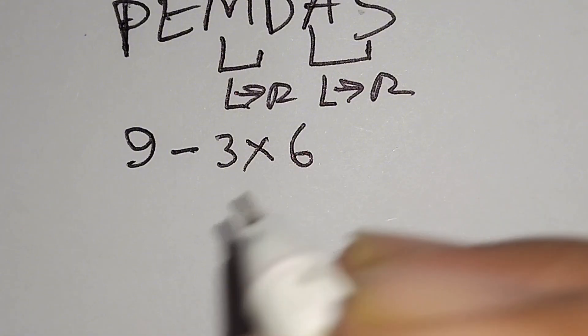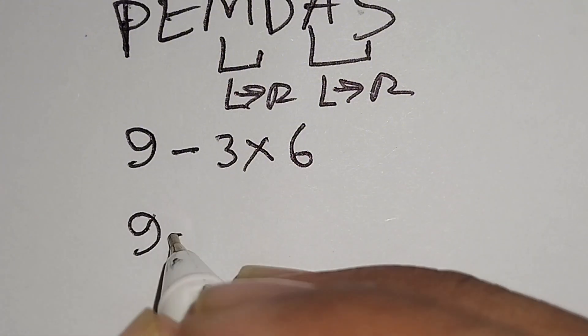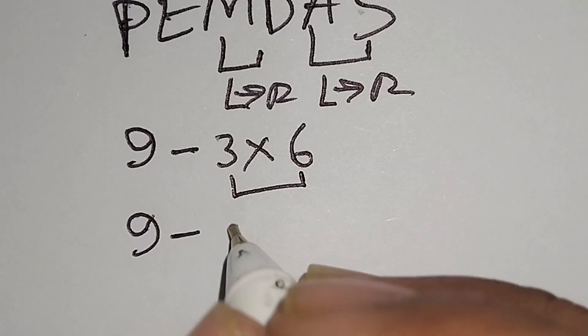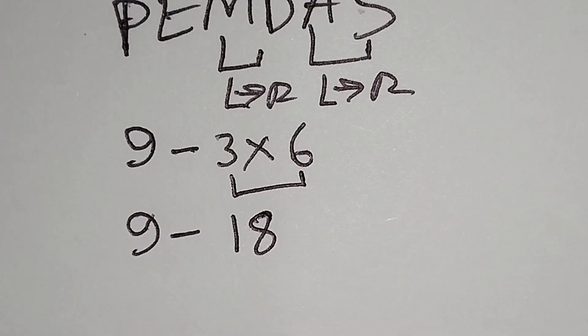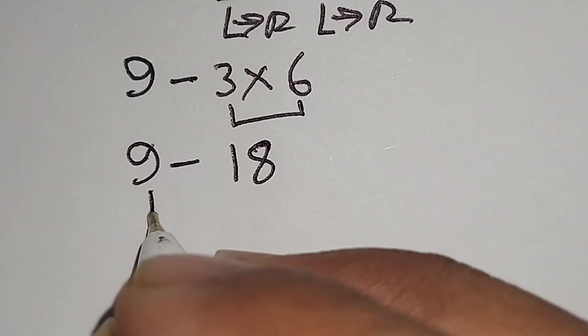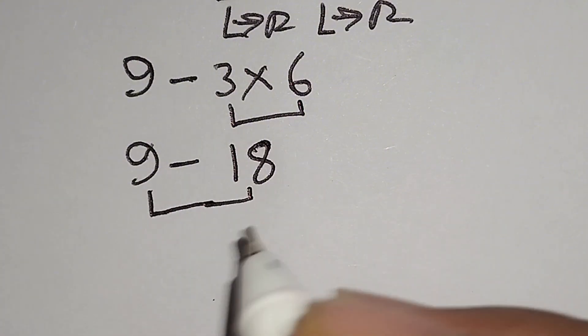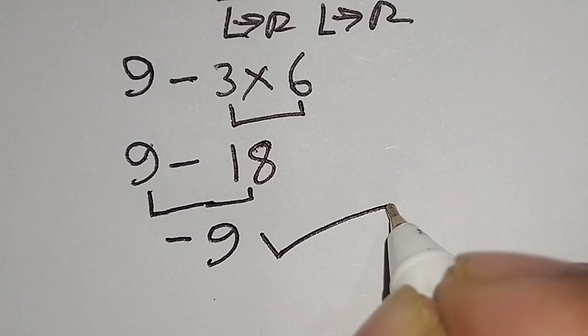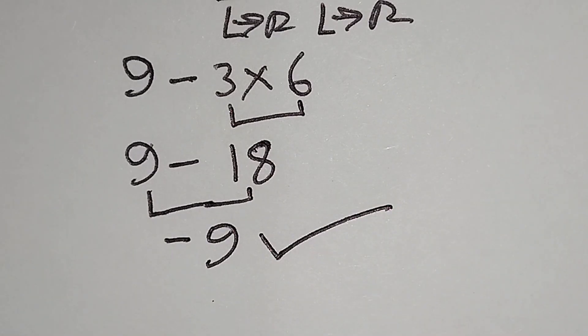Here, this 9 minus 3 times 6, 6 gives us 18. And 18 minus—sorry, 9 minus 18 gives us minus 9, and this is the correct answer. Thanks for watching the video. Please like, comment, share, and subscribe.